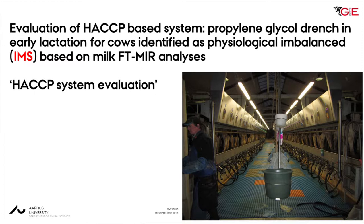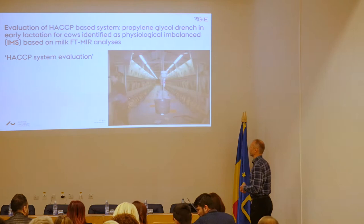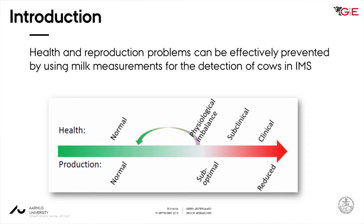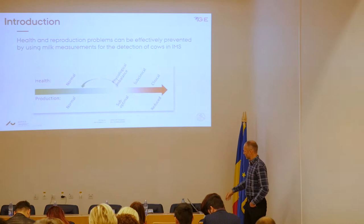Now for the study in the two private Danish herds. The idea was to take what was learned so far in the research on balanced and imbalanced cows — the cluster part — and put it into management in the herd and see if the herd gains something from that. What we used is the FT-MIR analysis as Clément has presented. The overall idea — remember — is that health and production problems can be effectively prevented by using milk measurement for the detection of cows in imbalanced metabolic status.